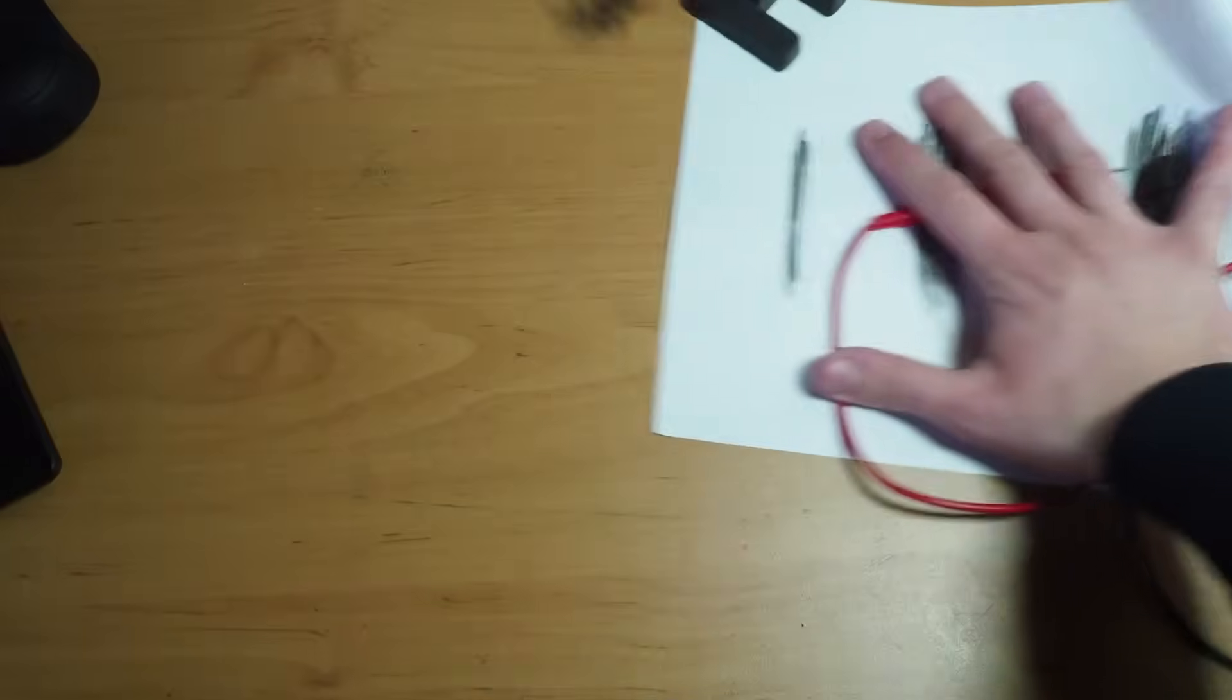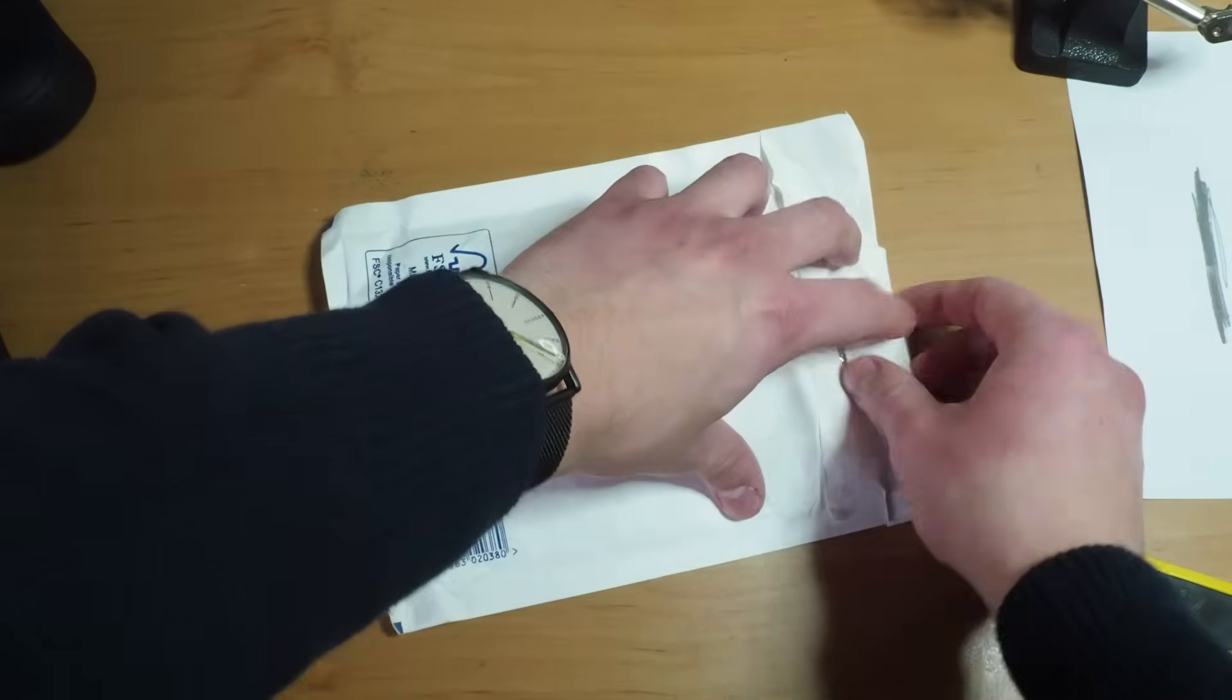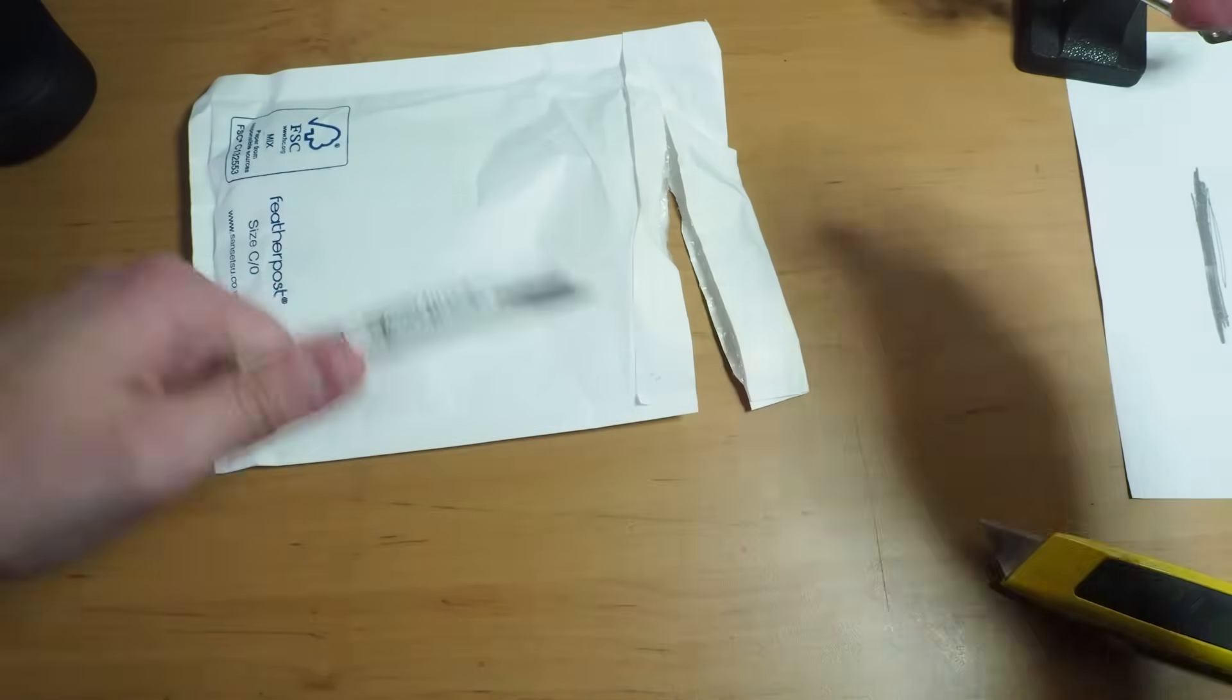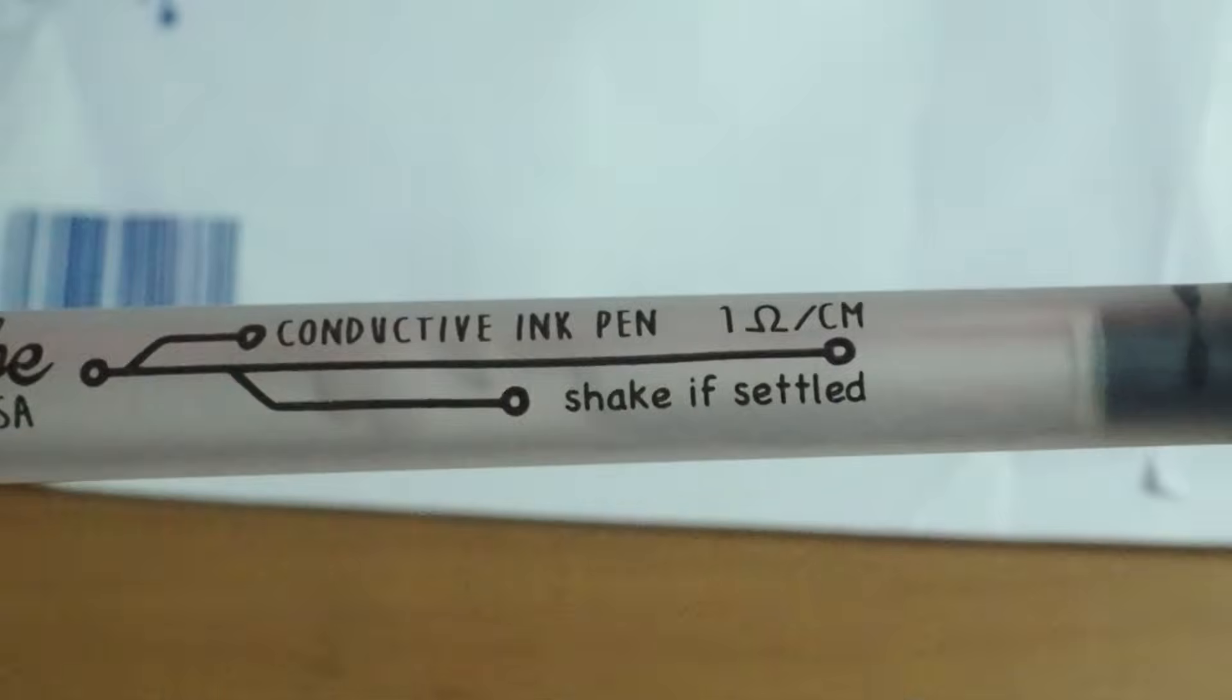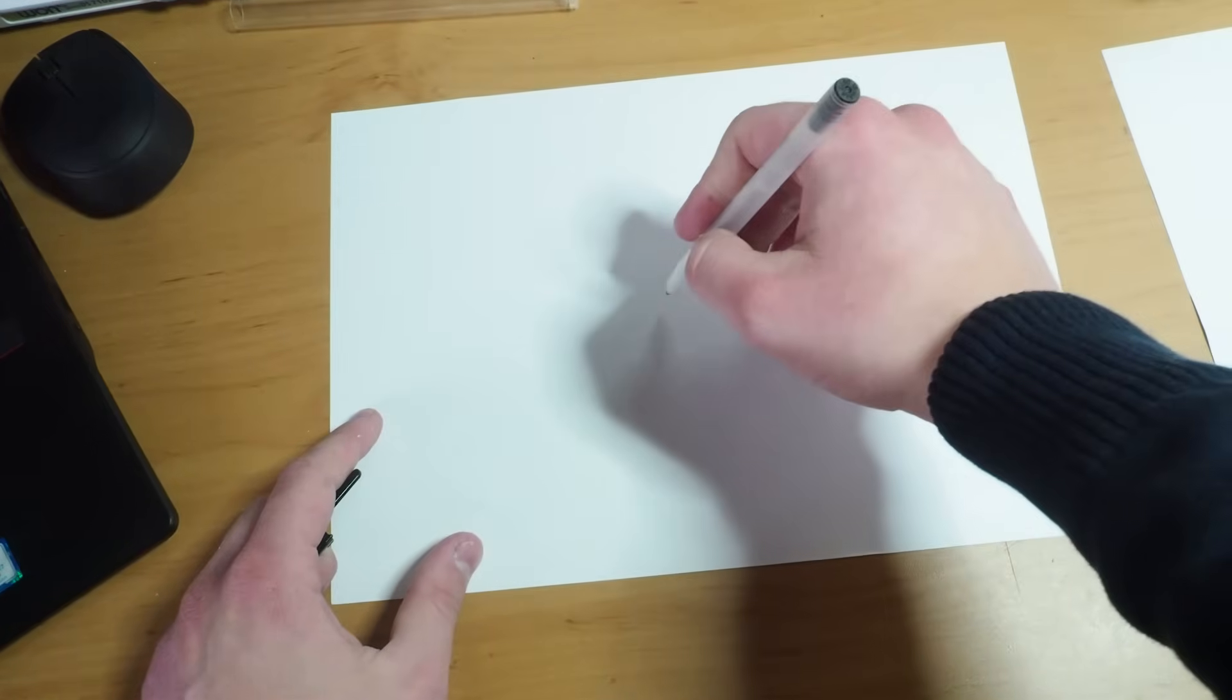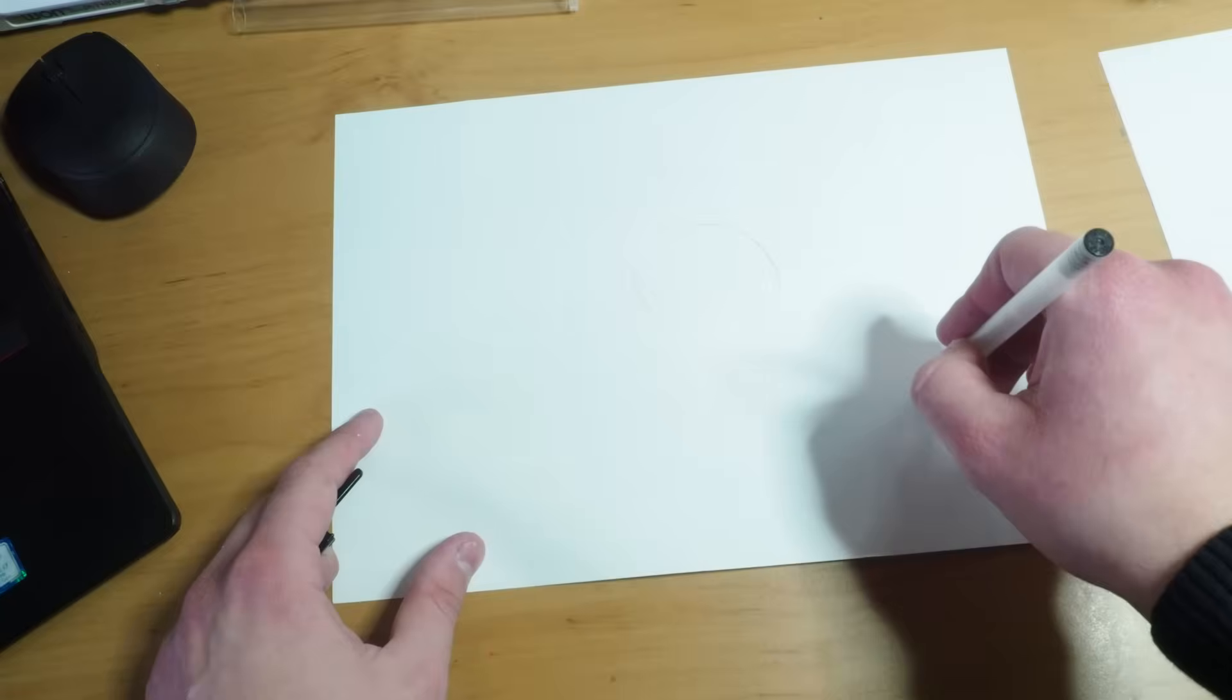So I have here a special conductive pen. Just kidding, I wish it's going to be this simple. I need to somehow draw a constant pitch spiral coil.